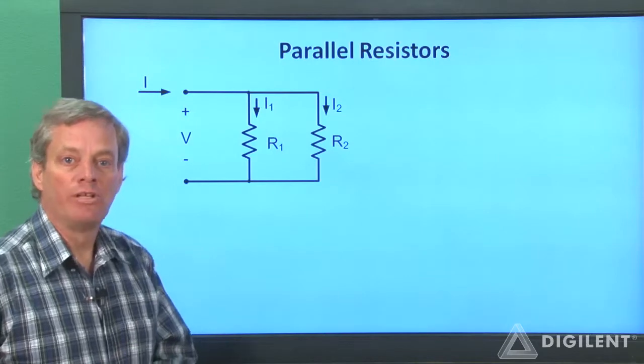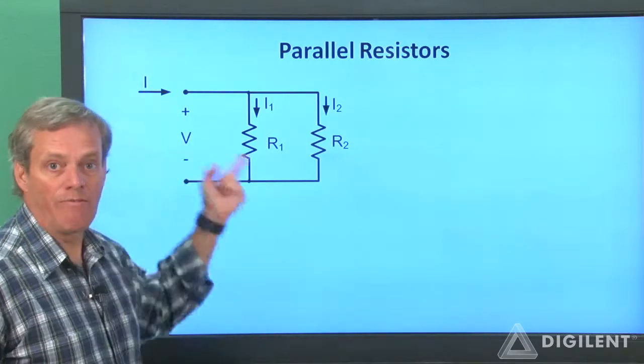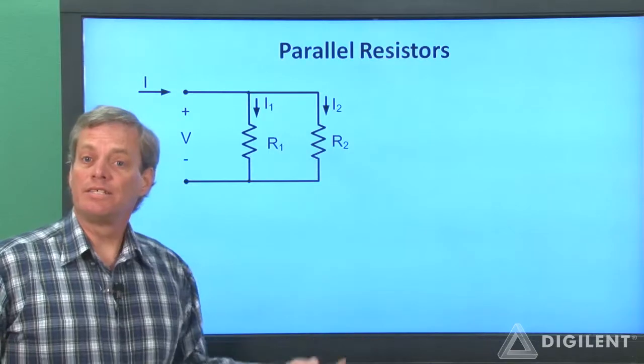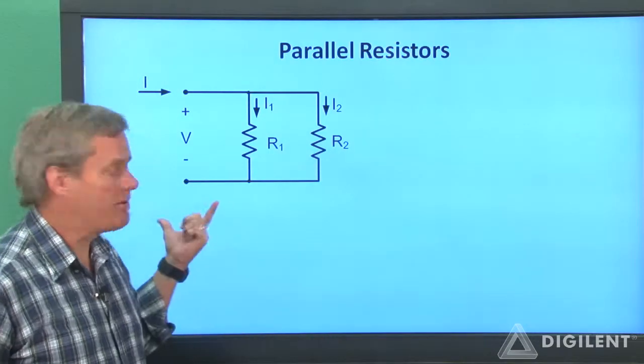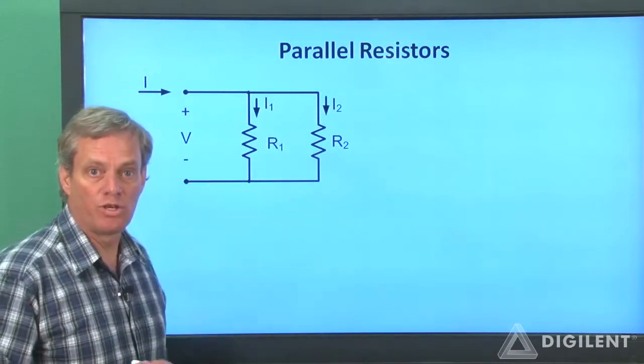Now let's see if we can determine a relationship between V and I for this pair of resistors. Essentially what we want is an IV characteristic for the whole circuit to the right of these two terminals.